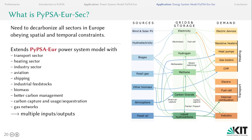So far we have only looked at the power system, but to limit global warming we need to decarbonize all energy sectors while obeying spatial constraints from network congestion and resource availability, as well as temporal constraints relating to long and short-term storage. PyPSA-EUR-Sec extends the PyPSA-EUR power system model with the transport sector, heating sector, industry sector, aviation and shipping. This yields a more comprehensive but also significantly more complex view of the European energy system, including a richer set of technologies and many more conversion paths between the different energy carriers.